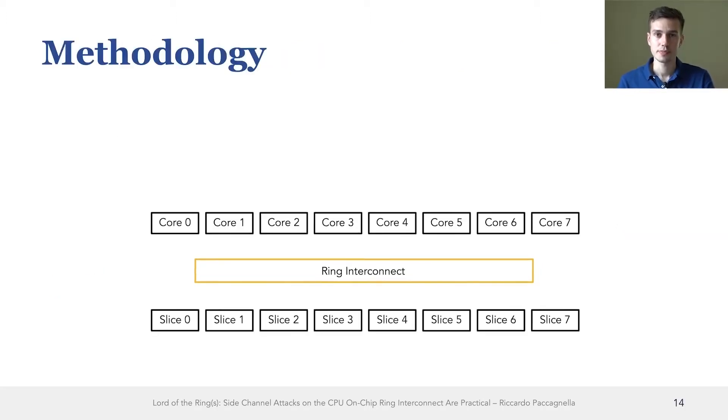Let's start from the first part. How did we go about reverse engineering the ring interconnect? The first question we asked ourselves was, is traffic on the ring interconnect susceptible to contention? And to answer this question, we took a real CPU and started running experiments on it.